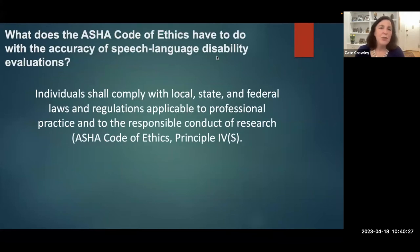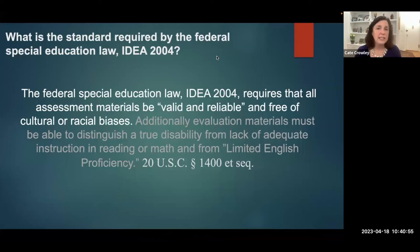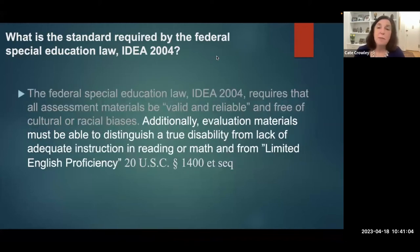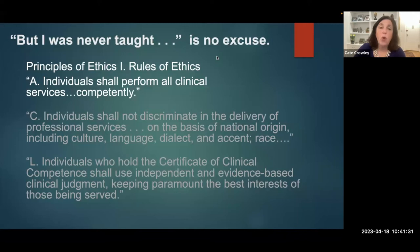What does ASHA's code of ethics have to do with the accuracy of speech-language disability evaluations? It says individuals shall comply with local, state, and federal laws and regulations applicable to professional practice and to the responsible conduct of research. The code of ethics brings in federal law, and here's what the federal special education law IDEA 2004 requires: all assessment materials must be valid, reliable, and free of cultural and racial biases. Additionally, evaluation materials must be able to distinguish a true disability from lack of adequate instruction in reading or math and from limited English proficiency.